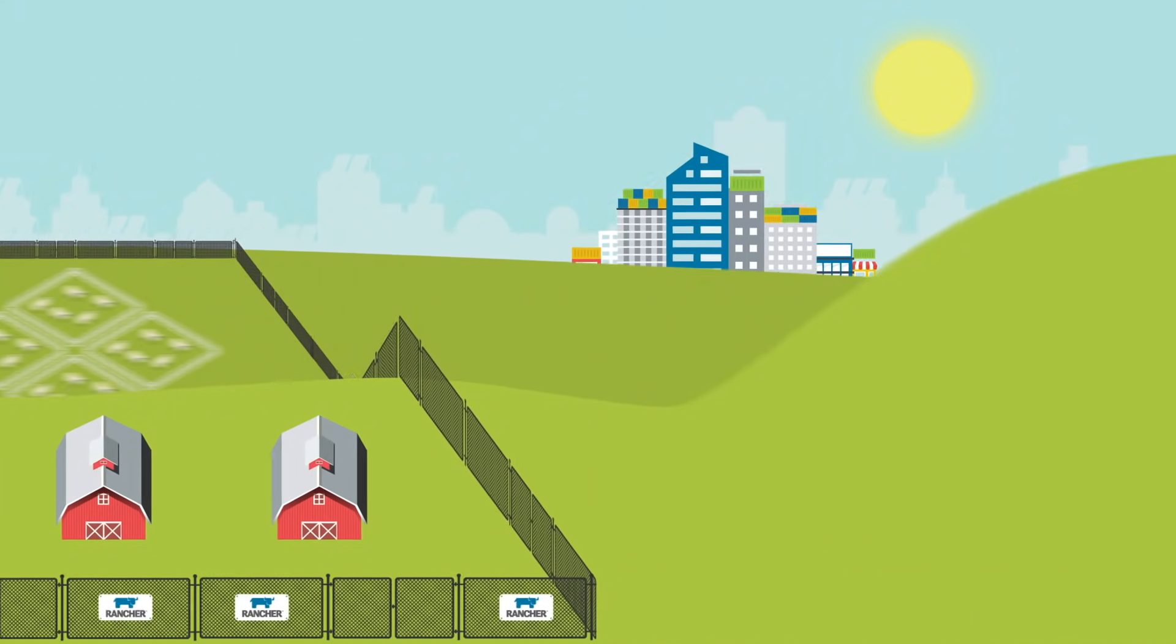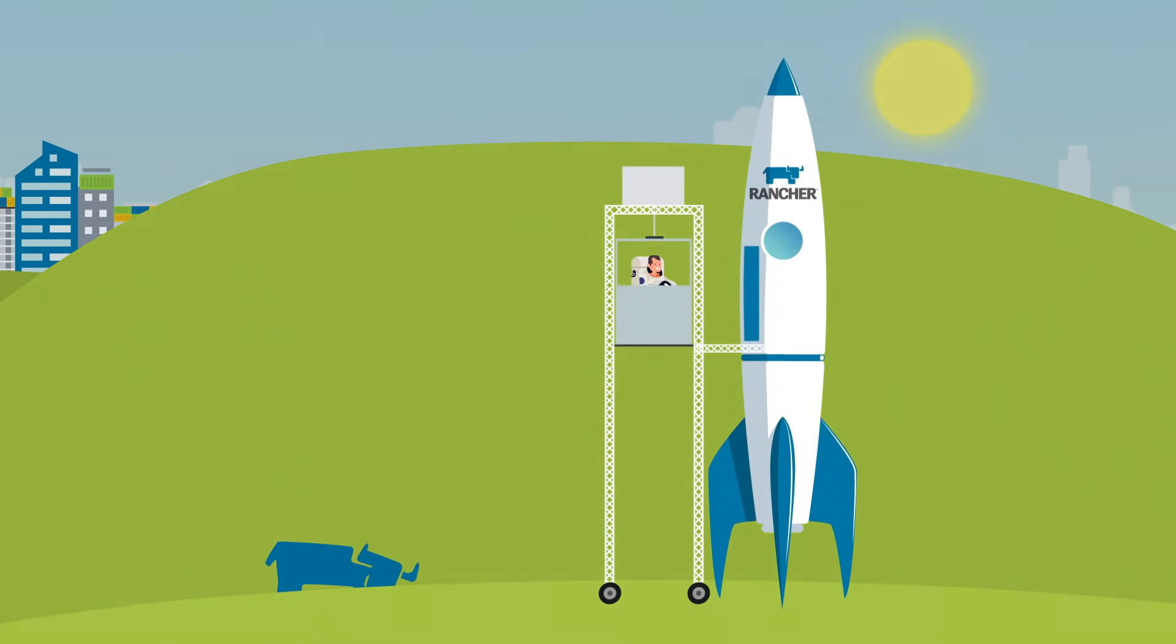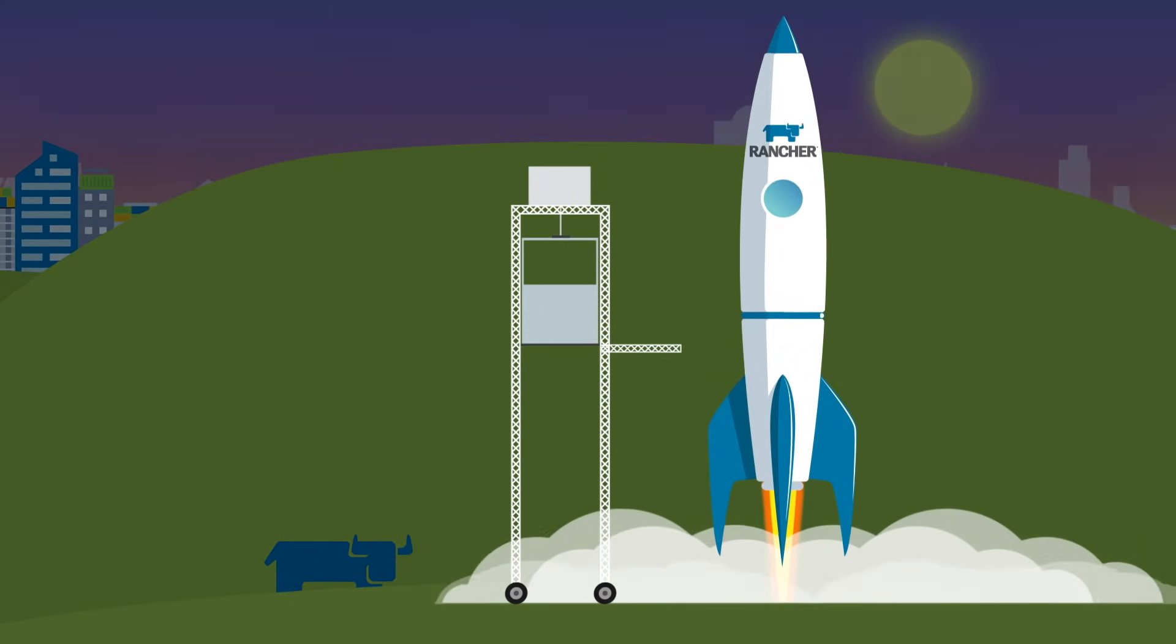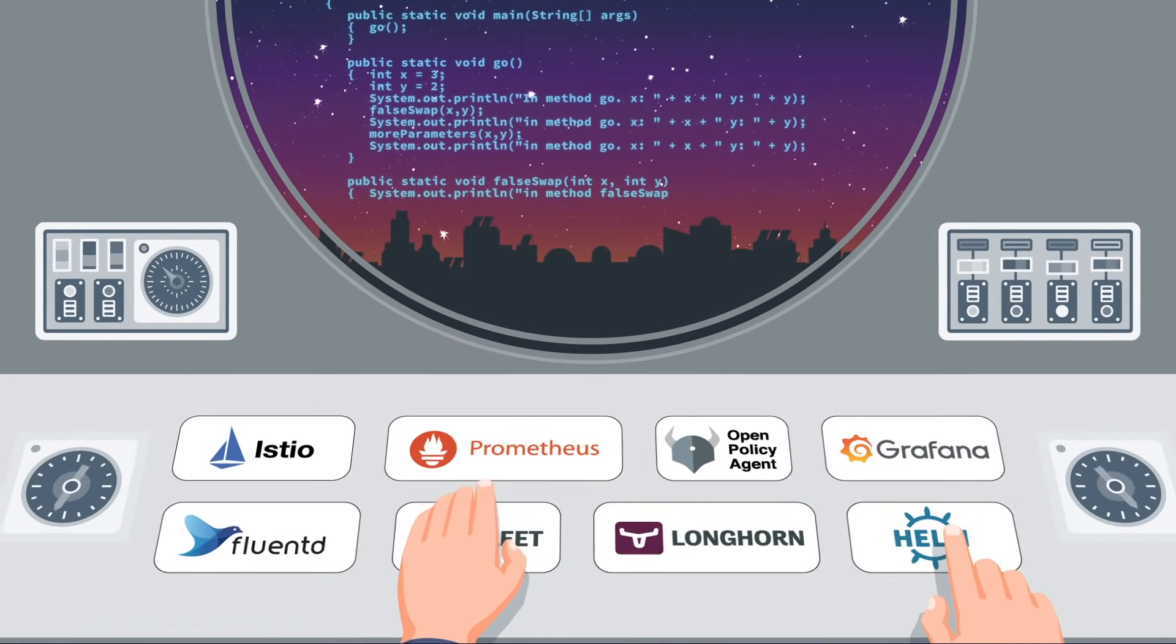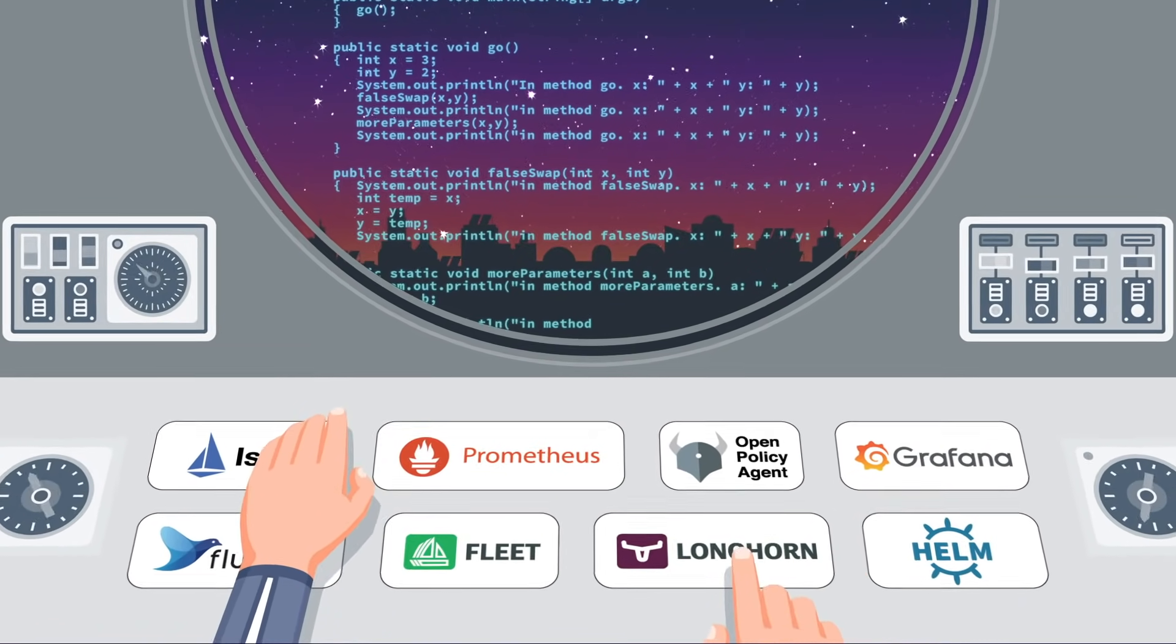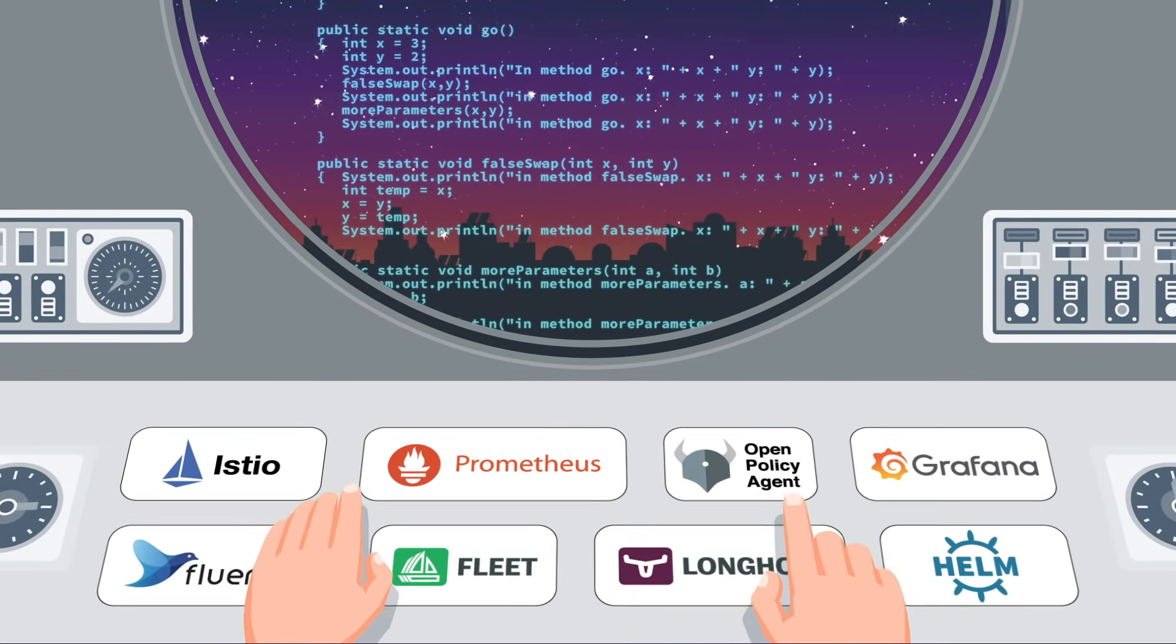With Rancher, everybody wins. IT ops can create more value upstream and accelerate time to market. By integrating popular open source tools, Rancher gives developers the agility they need to build world-class applications faster.